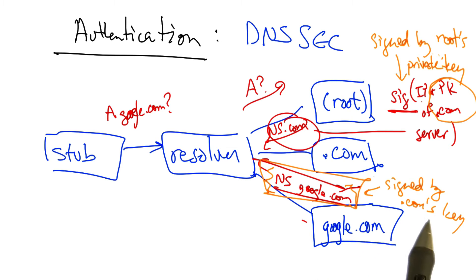Similarly, the .com server will return not only the IP address for google.com, but also the IP address and public key for the google.com authoritative name server. So that when google returns its answers, the resolver can check the signatures coming from google.com.